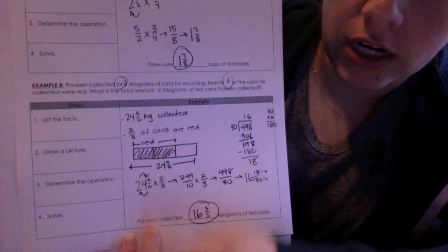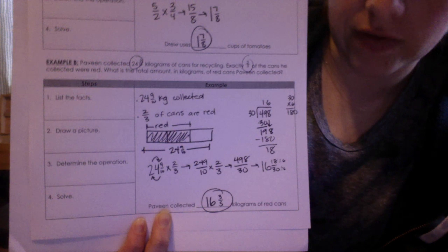So 2 thirds of 24 and 9 tenths. This is a multiplication problem. It's scaling down 24 and 9 tenths to only 2 thirds of its size. So I wrote it out as multiplication.